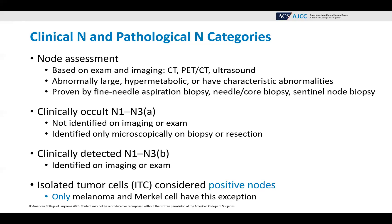Clinically occult N1 to N3 with an 'A' designation is not identified on imaging or exam — it is identified only microscopically on a biopsy or resection. Clinically detected, N1 to N3 with a 'B', is identified on imaging or exam. As a reminder, isolated tumor cells are considered positive nodes for melanoma and Merkel cell only. All other disease sites consider them negative nodes, but data has proven these do act and have the outcome of positive nodes.